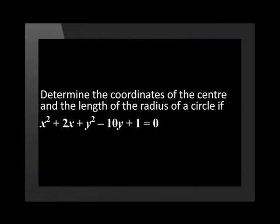These examples were quite simple because the equation of the circle was in its standard form. Let's have a look at what will happen if the equation of the circle is not in this standard form. Determine the coordinates of the center and the length of the radius of a circle if x squared plus 2x plus y squared minus 10y plus 1 is equal to 0. To find the center and the radius we will have to manipulate the equation to the standard form.